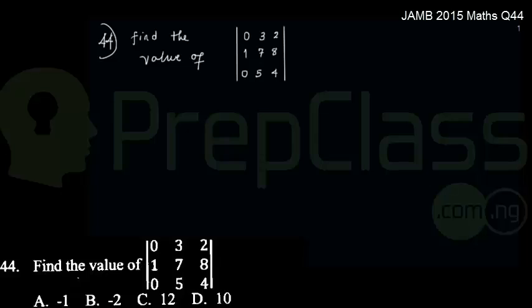We are currently on question 44. Question 44 says find the value of the determinant containing the elements 0, 3, 2, 1, 7, 8, 0, 5, 4. This is not actually a matrix, it's actually a determinant and it has a value which we are to find.